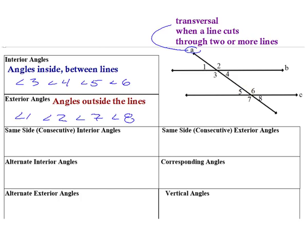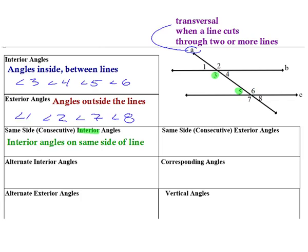Same side interiors, sometimes called consecutive interiors, involve interior angles that are on the same side of the transversal. My transversal is A, and angles 3 and 5 are on the same side of it — as are 4 and 6. So if asked to list consecutive interior pairs, you could say 3 and 5, or 4 and 6.